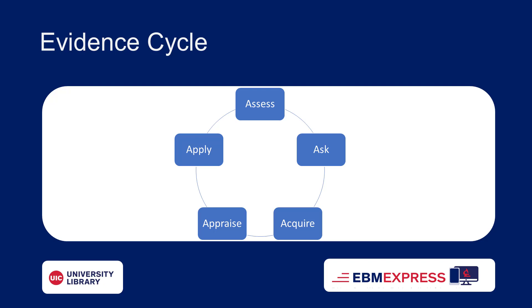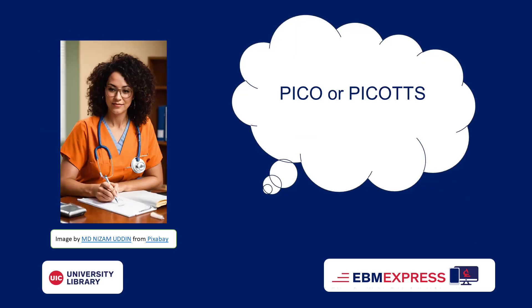By organizing the clinical question using the PICO format, you can use the specific terms to aid in finding clinically relevant evidence in the literature. PICO stands for Patient, Population or Problem; Intervention, Exposure or Prognostic Factor; Comparison; and Outcome of Interest.